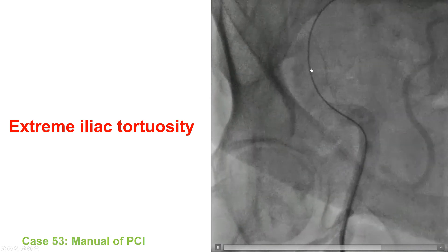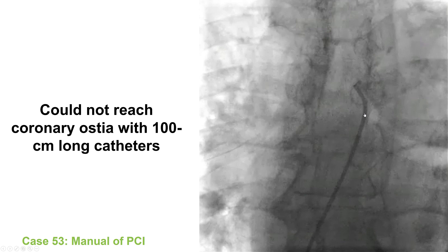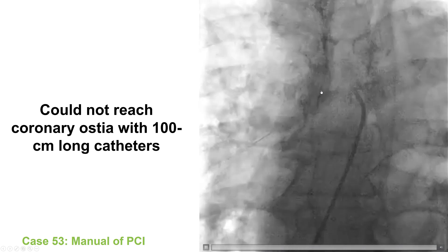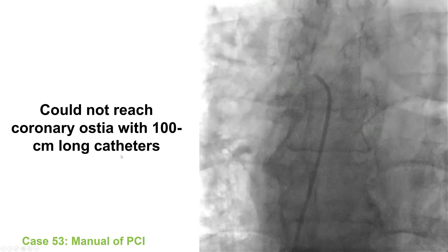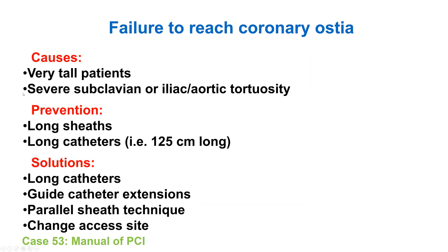There are examples of extreme iliac tortuosity in which the catheter has difficulty advancing. There is also the case in which the catheter could not reach far because it was too short — a longer catheter was used to reach the coronary ostium. This can happen in very tall patients, usually more than six feet, or in patients with severe iliac or subclavian tortuosity. Prevention is by using long sheaths and long catheters; solutions include long catheters, a guide catheter extension, or the parallel sheath technique that straightens the iliac arteries, or potentially changing the access side.